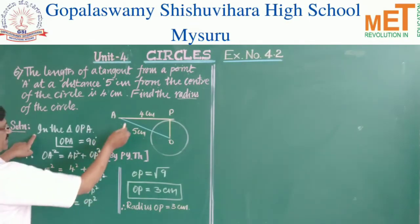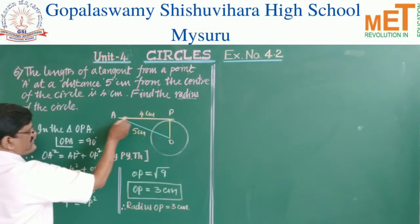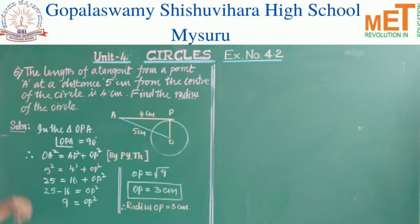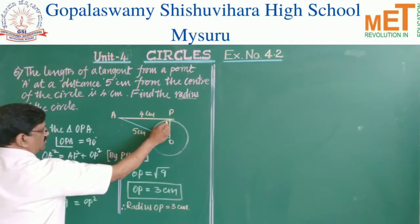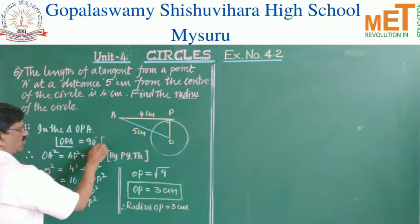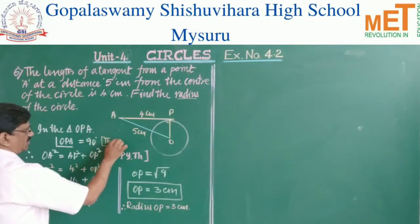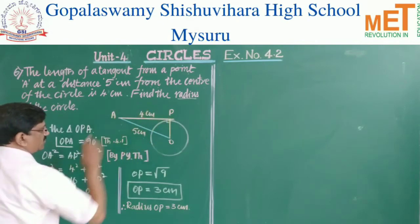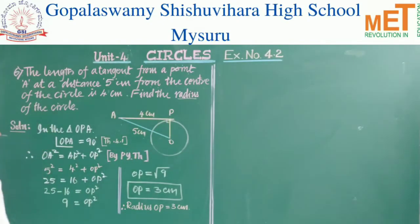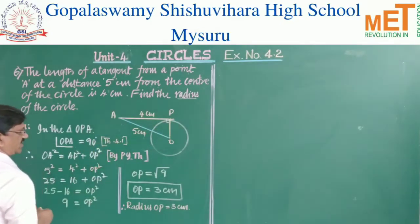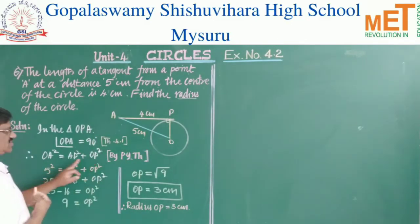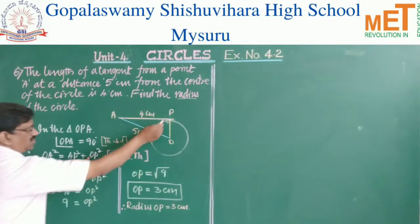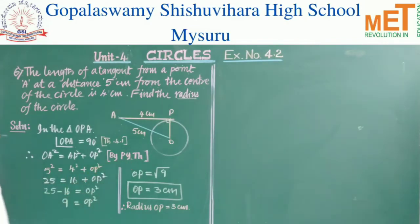In triangle OPA, angle P equals 90 degrees according to Theorem 4.1, since the radius and tangent at the point of contact are perpendicular. This forms a right-angle triangle, so we can apply the Pythagorean theorem: OA² = AP² + OP².